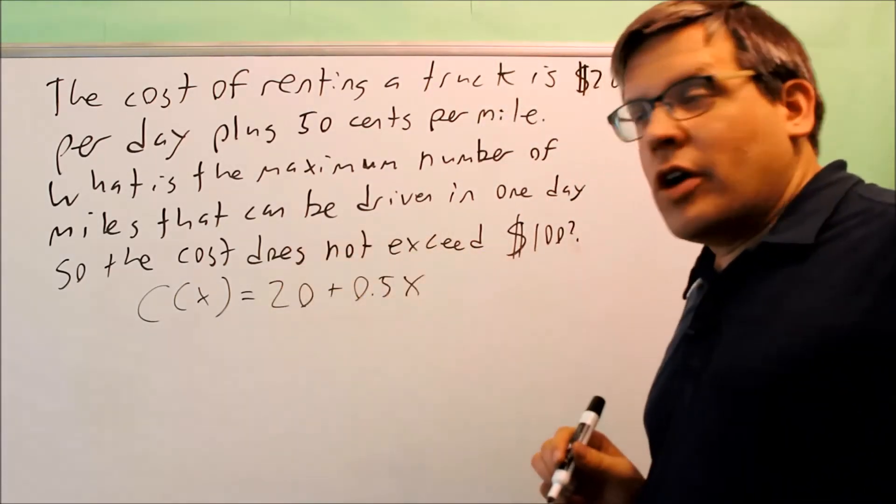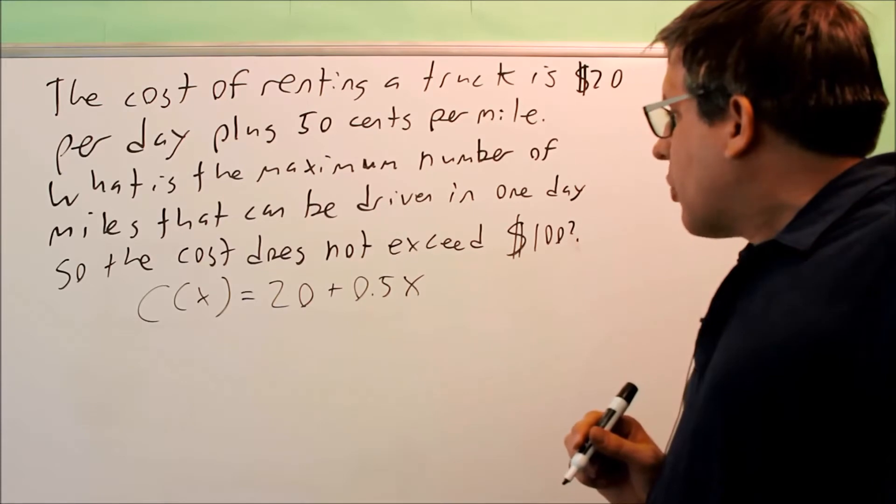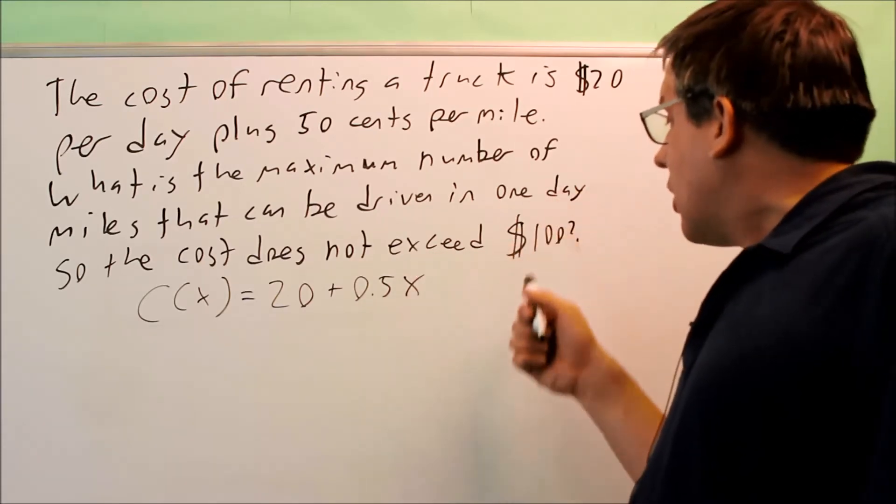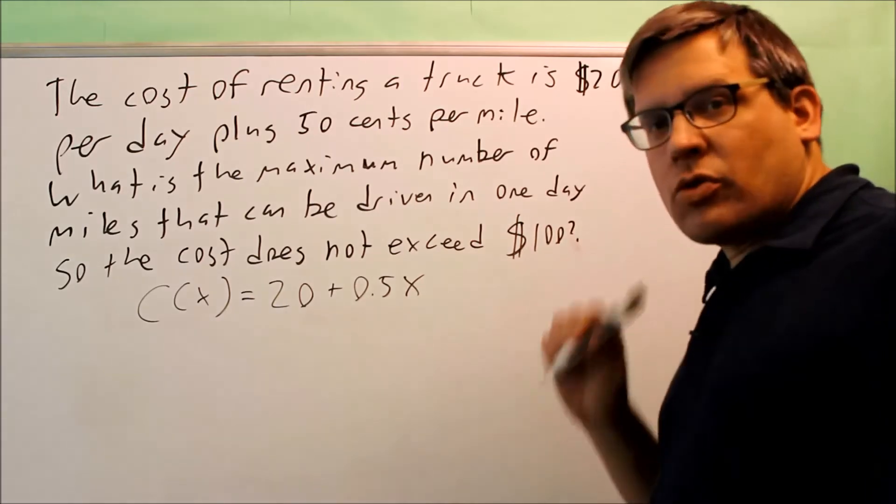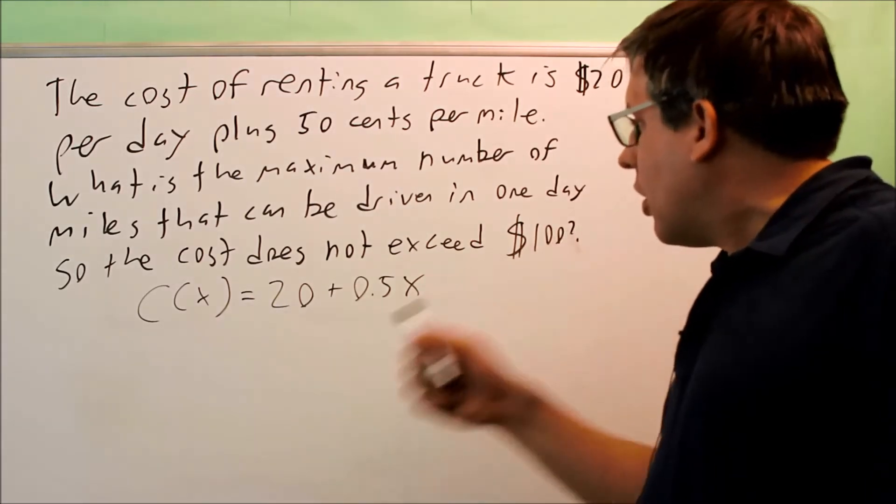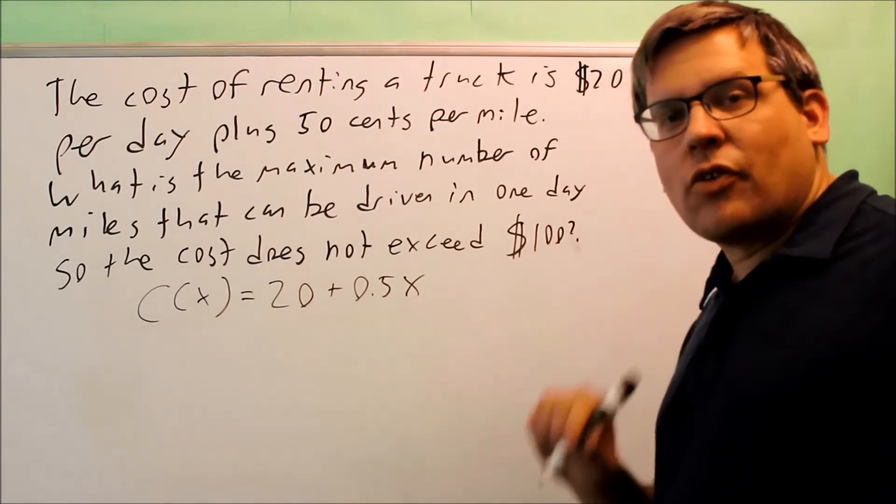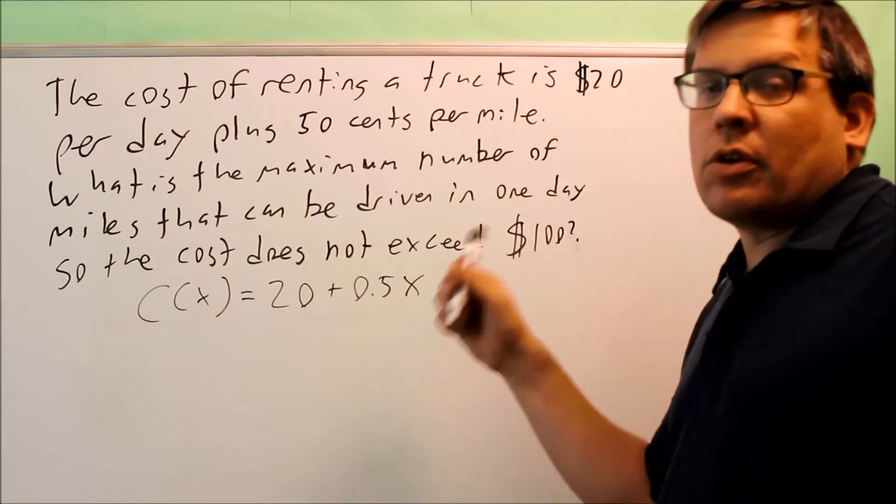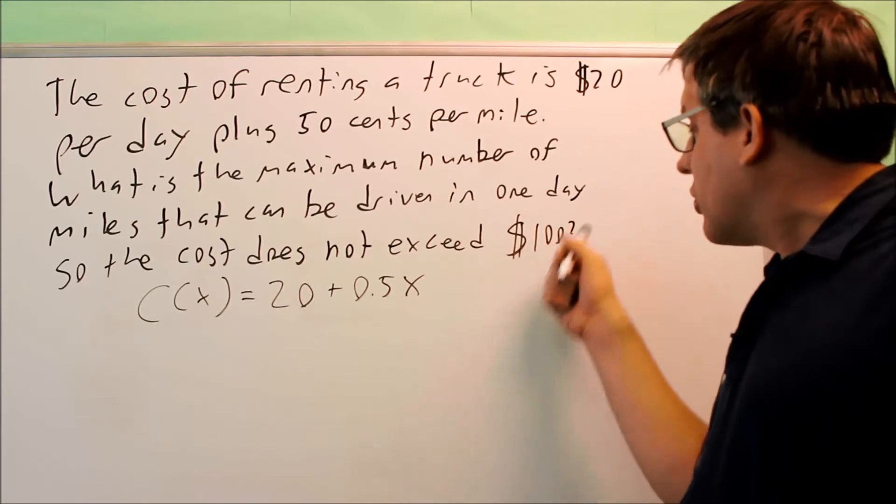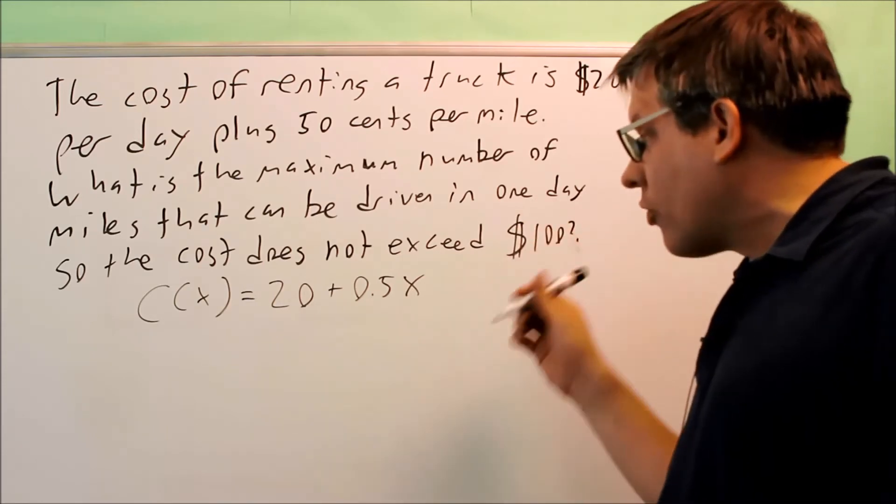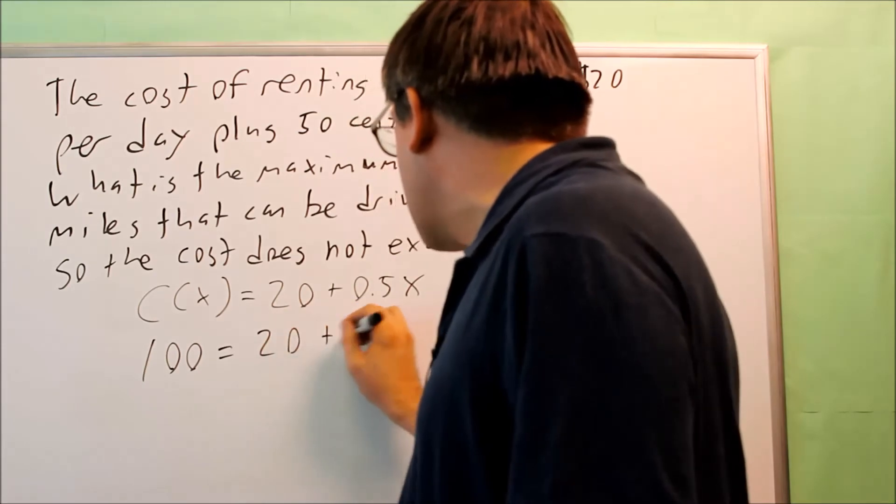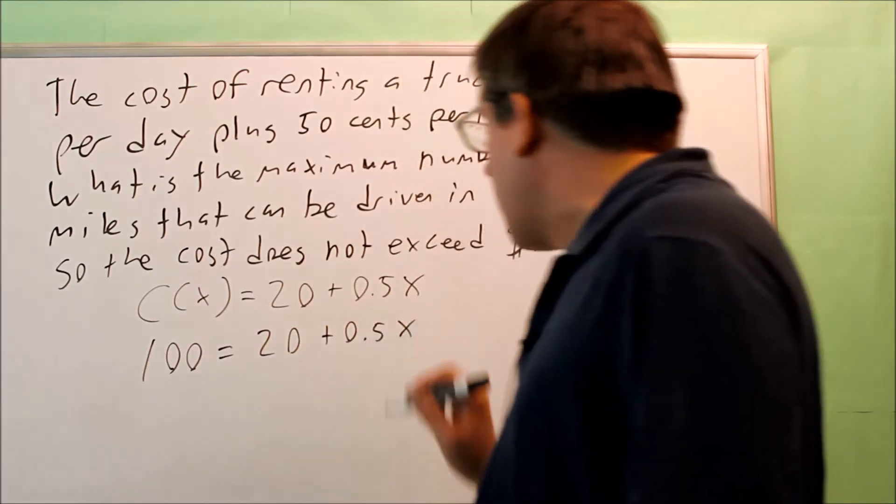So this is going to be my cost equation. Now, what I want to do is find out what the number of miles can be driven so that the cost does not exceed 100. So $100 is the most that I could have. So if I put 100 in for my cost and solve for this, that's going to tell me the miles that can be driven. That would be the most miles that can be driven in order to reach $100. I don't want to go over 100, so I want to see what I get if I set this equal to 100. So that's how I'm going to solve this one.